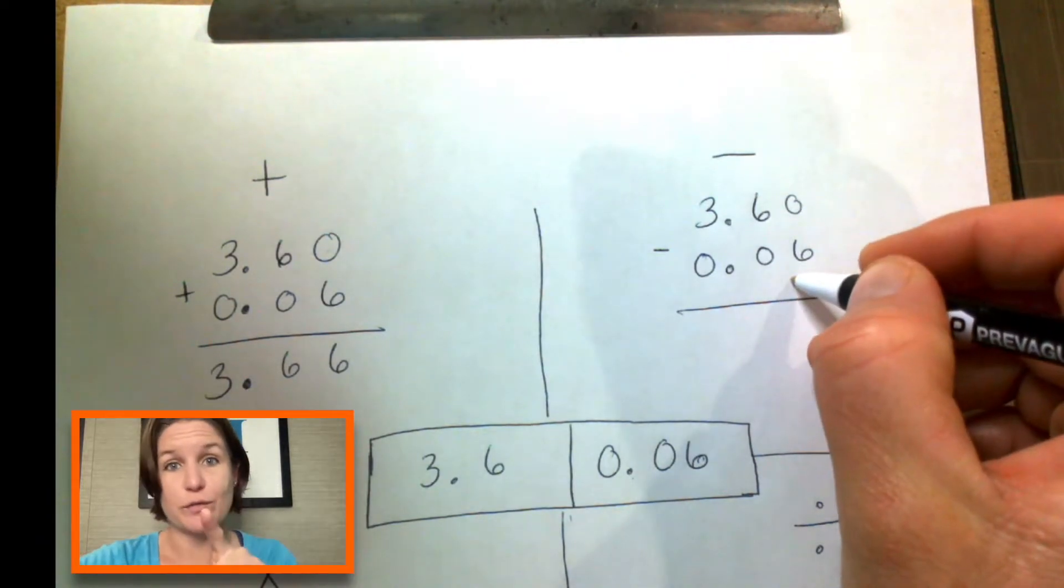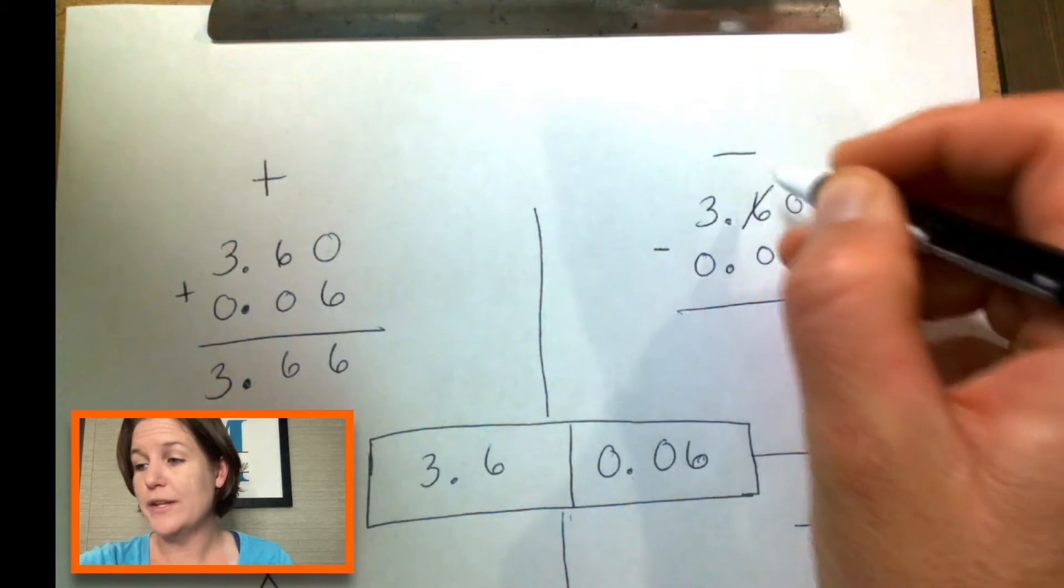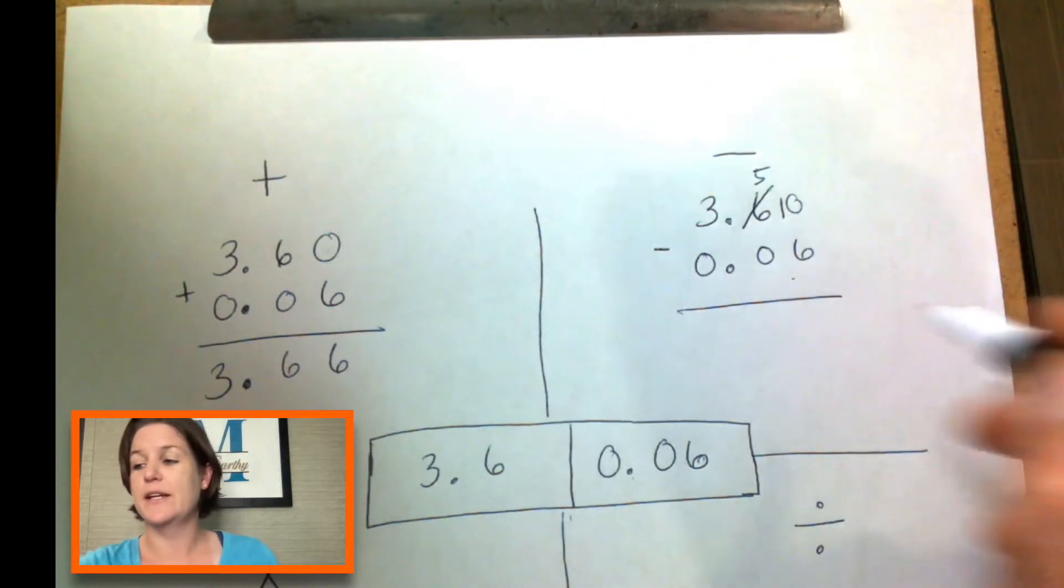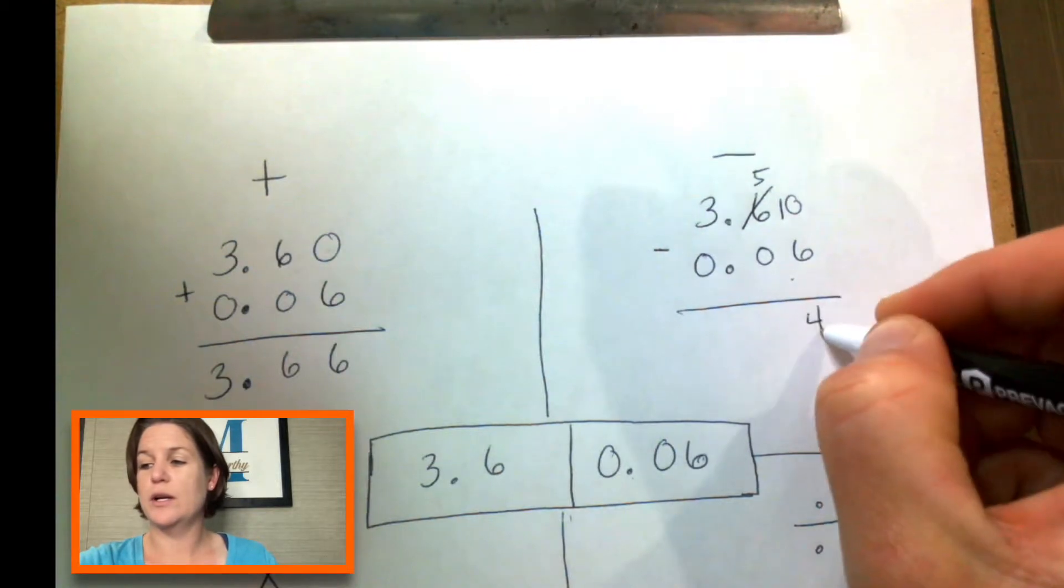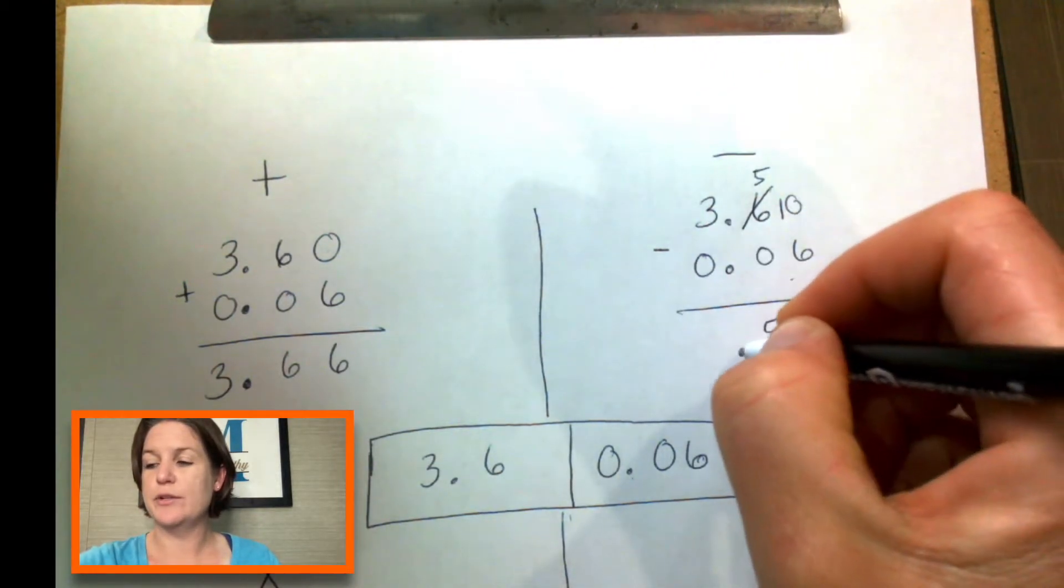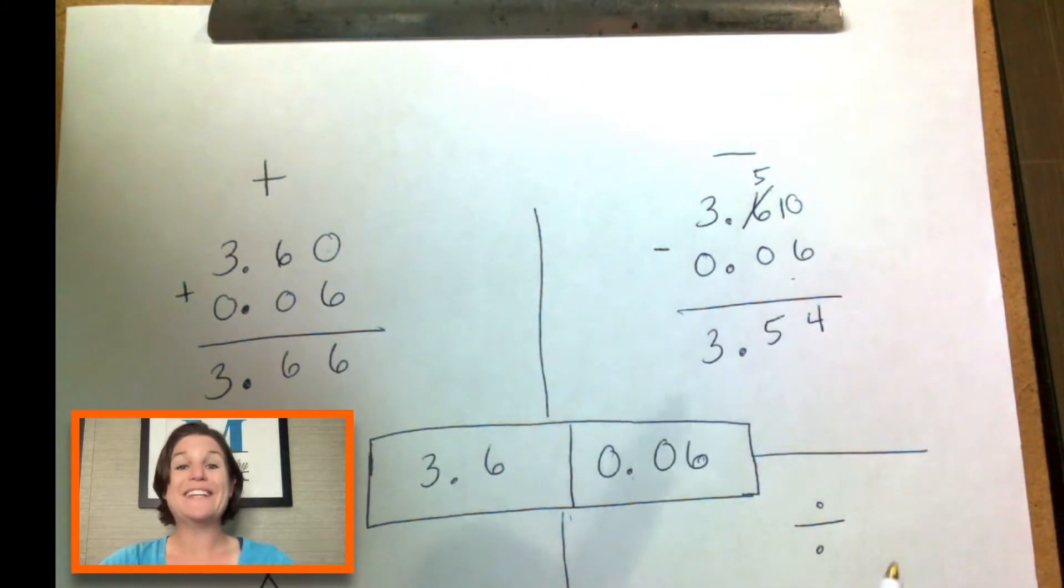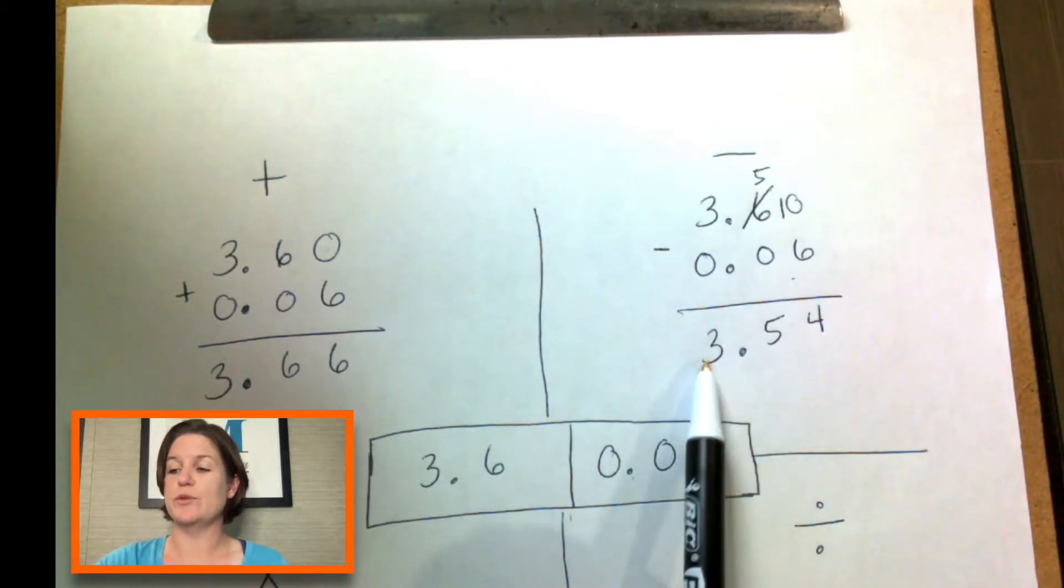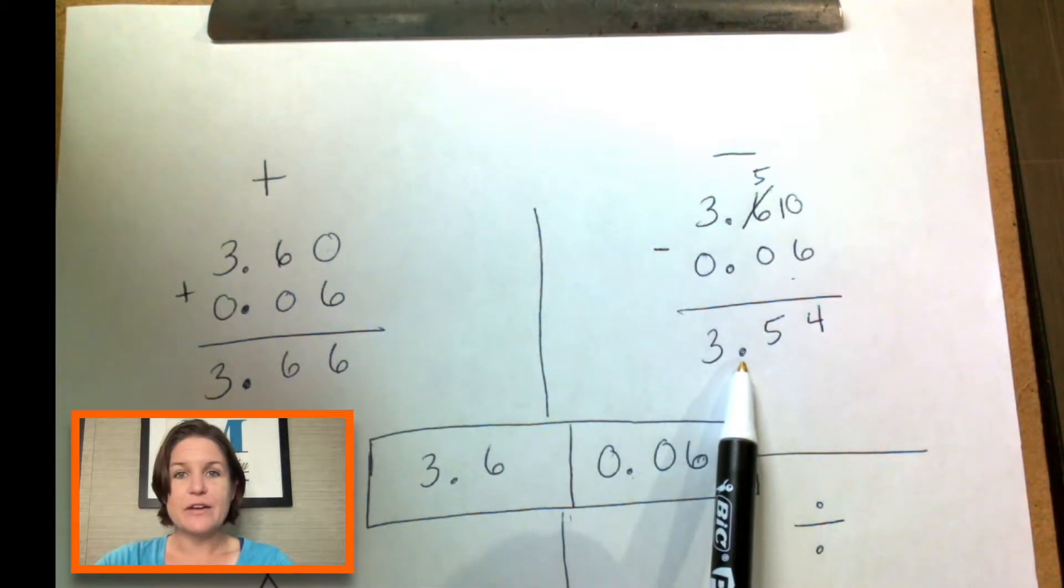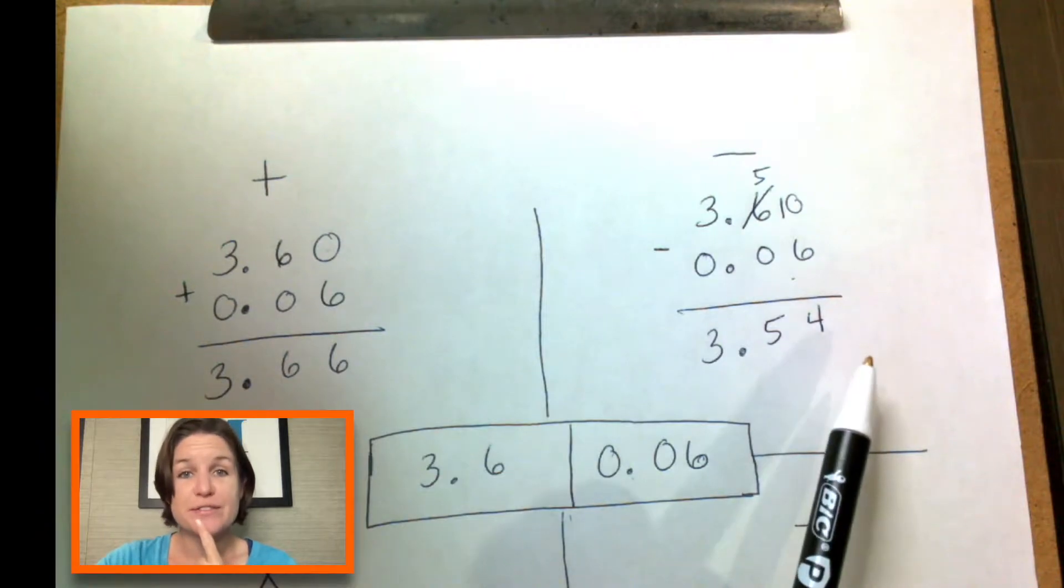Zero minus six is? Don't forget to regroup. Take one, that becomes a five. Give one, that becomes a ten. Ten minus six is four. Five minus zero is five. Bring down your decimal and then three. So if we were to find the difference of these two decimals, numbers with decimals, it would be 3.54, right?